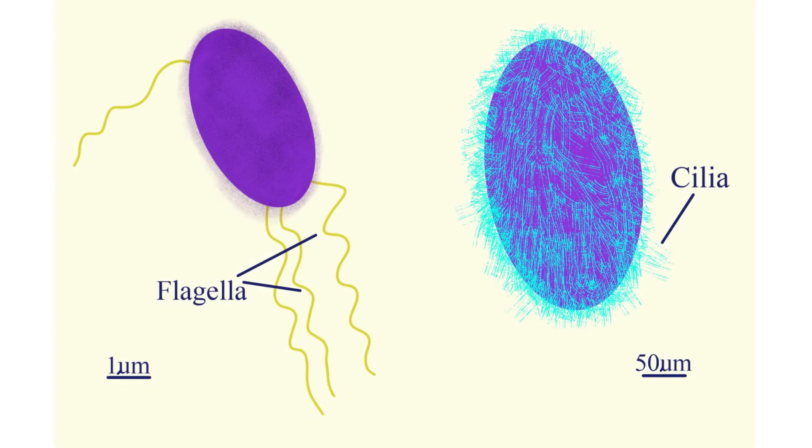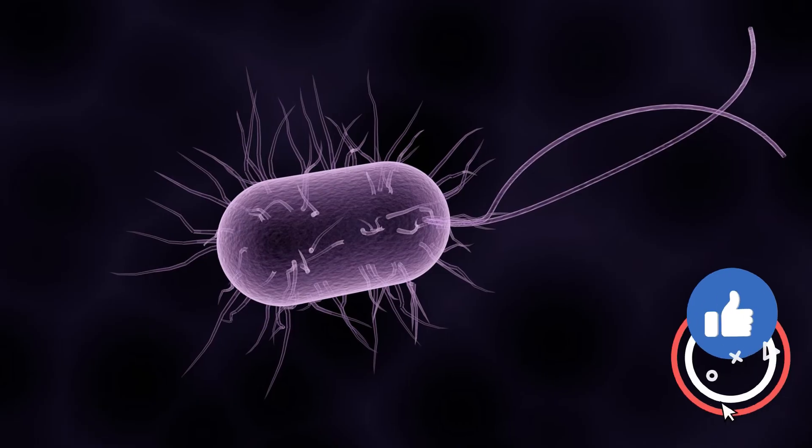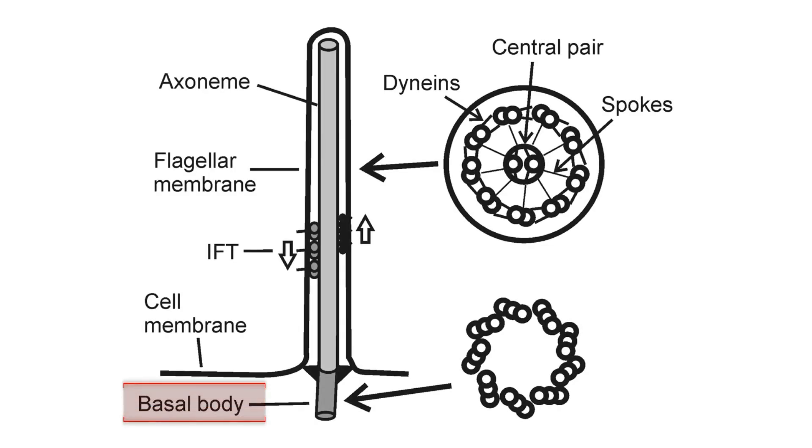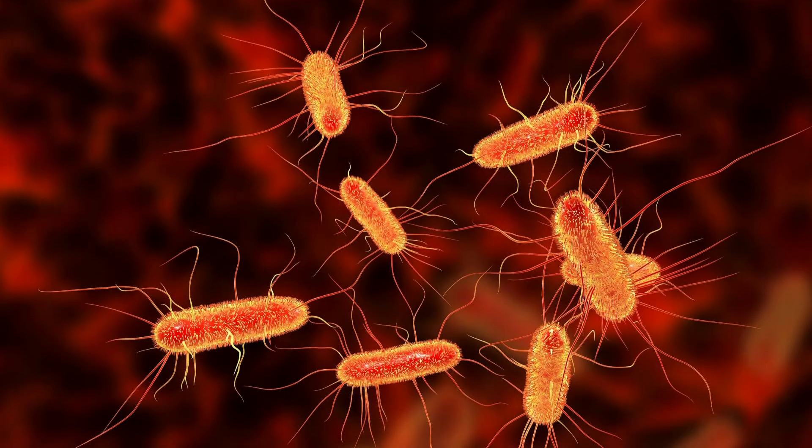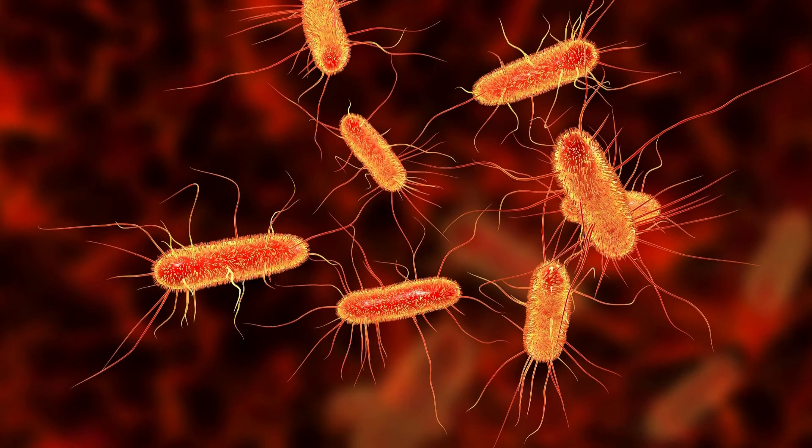Centrioles are also involved in the formation of cilia and flagella, which are hair-like structures protruding from the surface of some cells. In this context, the centrioles are known as basal bodies. They template the formation of microtubule doublets that make up the axoneme, the central structural core of cilia and flagella, enabling these cellular extensions to function in processes like movement and sensory reception.